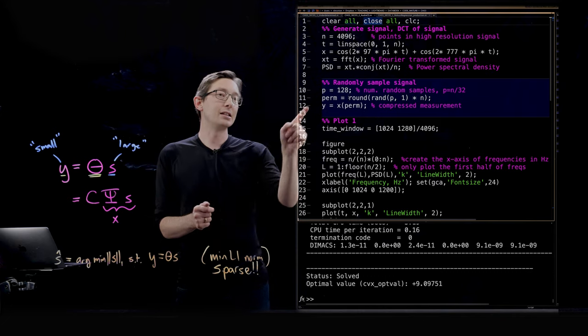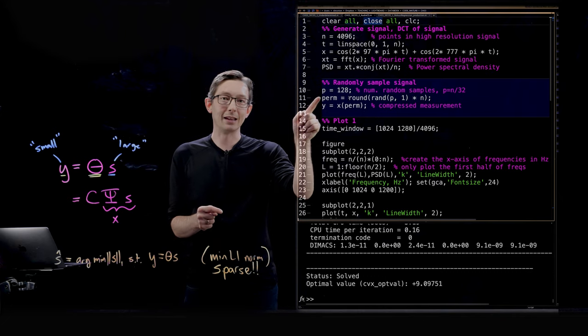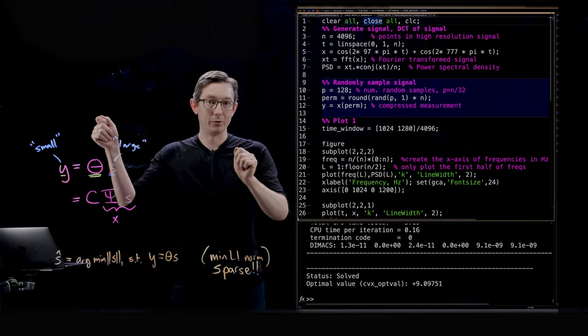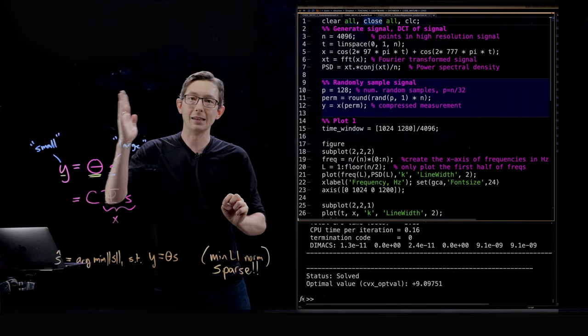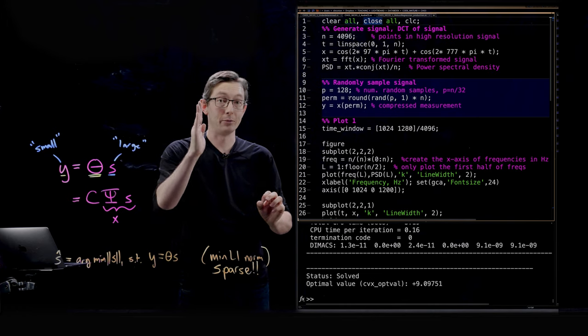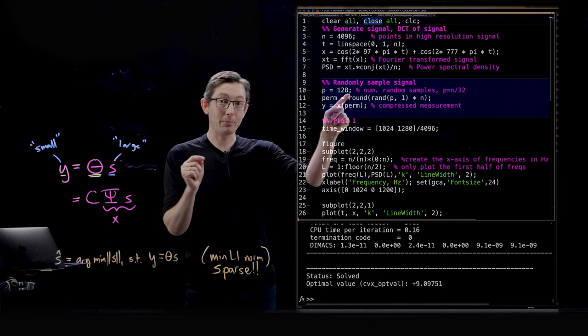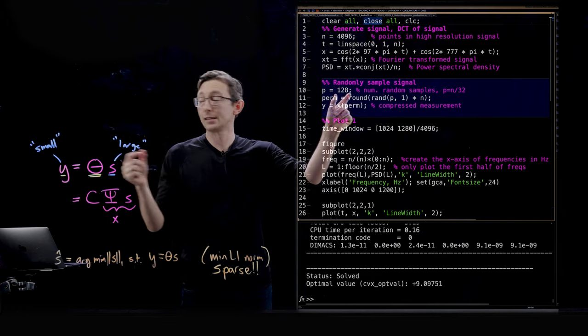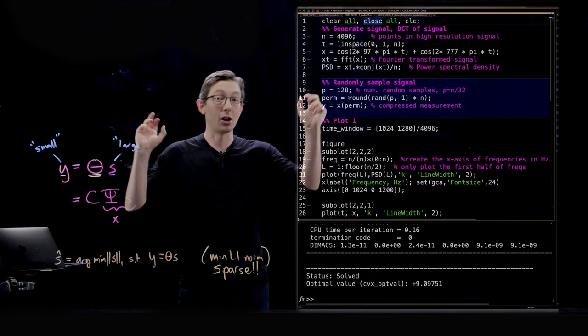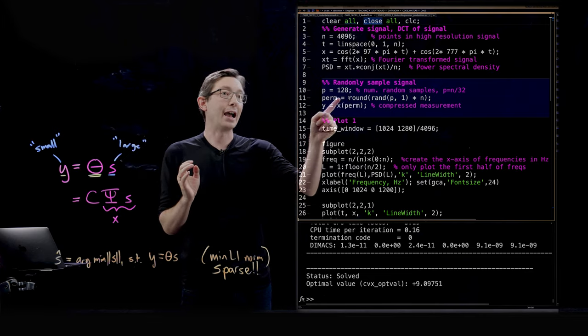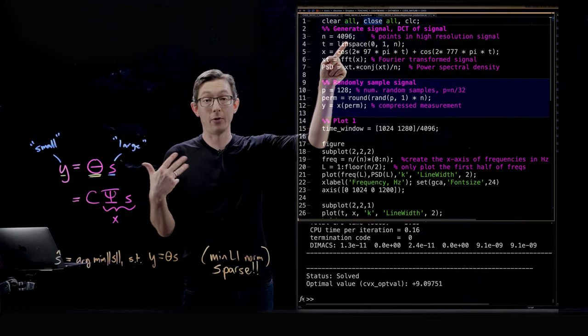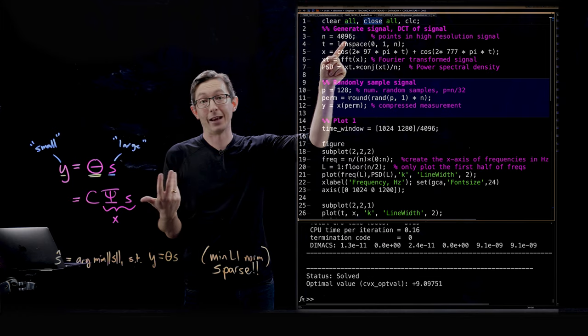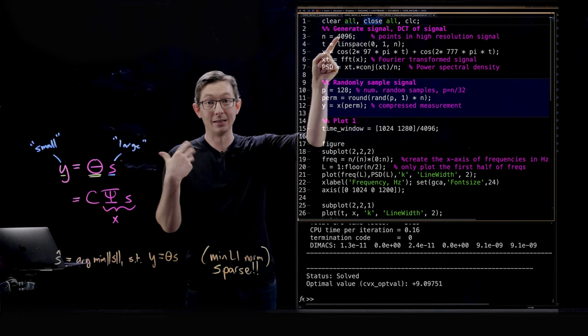But the catch here is that these 128 samples per second are randomly sampled and I'm assuming that I have an extremely precise time stamp of when they were sampled. So I'm only collecting 128 measurements per second, 128 Hertz on average, but I know exactly where they occurred in time up to 4096 Hertz accuracy, up to this resolution in time.